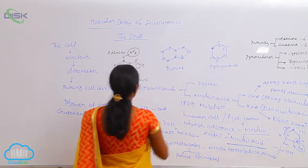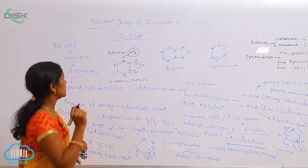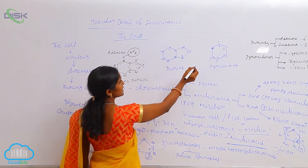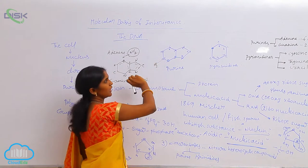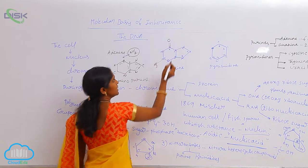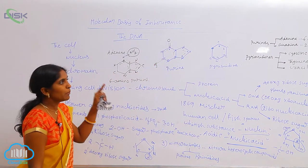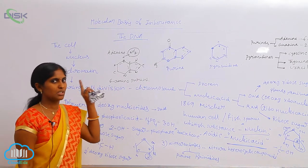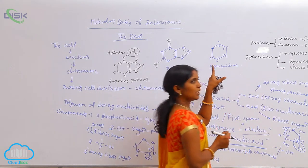And what is guanine? Guanine is nothing but 2-amino-6-oxypurine. Two-amino-6-oxypurine means at the second position the amino group is present, and at the sixth position the oxygen group is present. That indicates 2-amino-6-oxypurine.